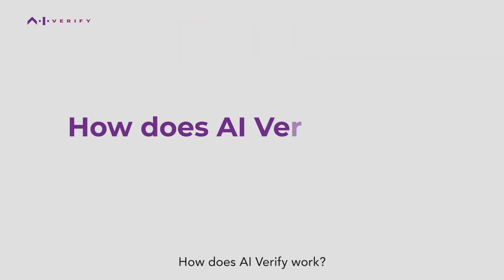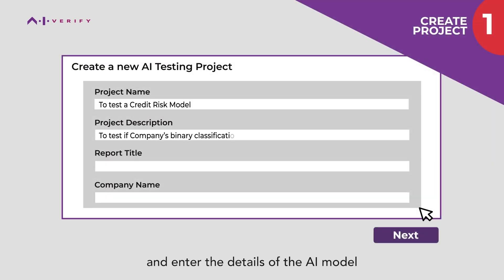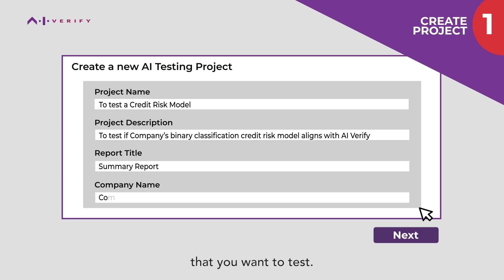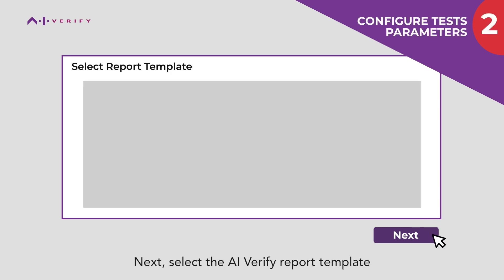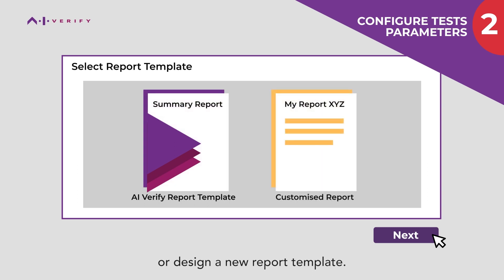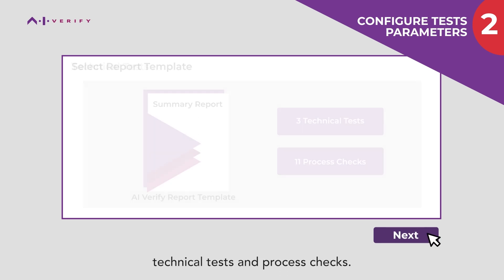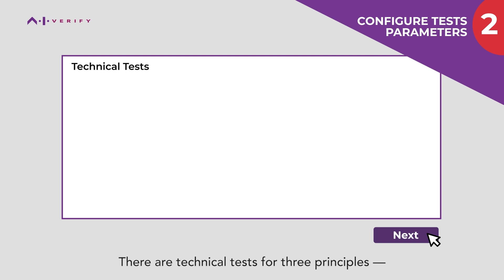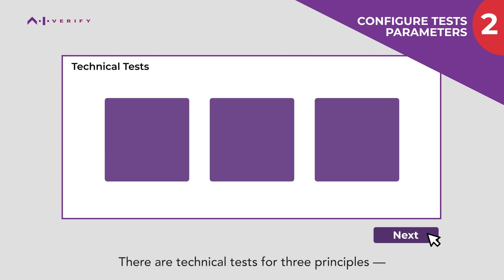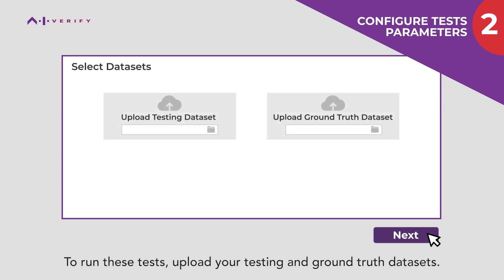To use AI Verify, first create a new project and enter the details of the AI model that you want to test. Next, select the AI Verify Report Template or design a new report template. Selecting the AI Verify Report Template will provide you with an overview of the technical tests and process checks. For the AI Verify Report, there are technical tests for three principles – fairness, robustness, and explainability. To run these tests, upload your testing and ground-truth datasets.